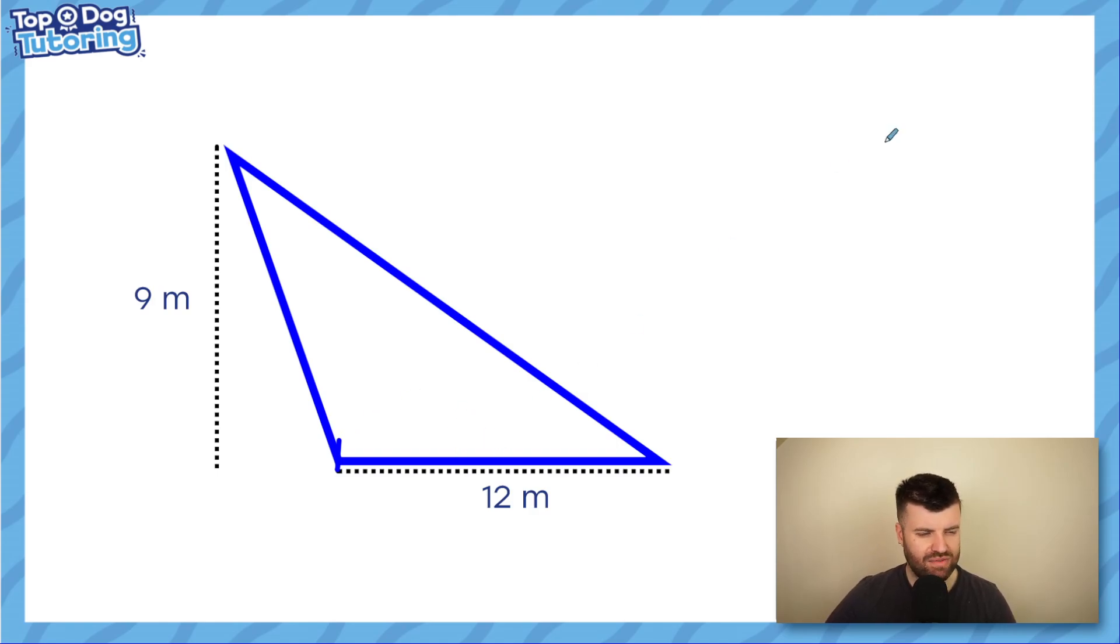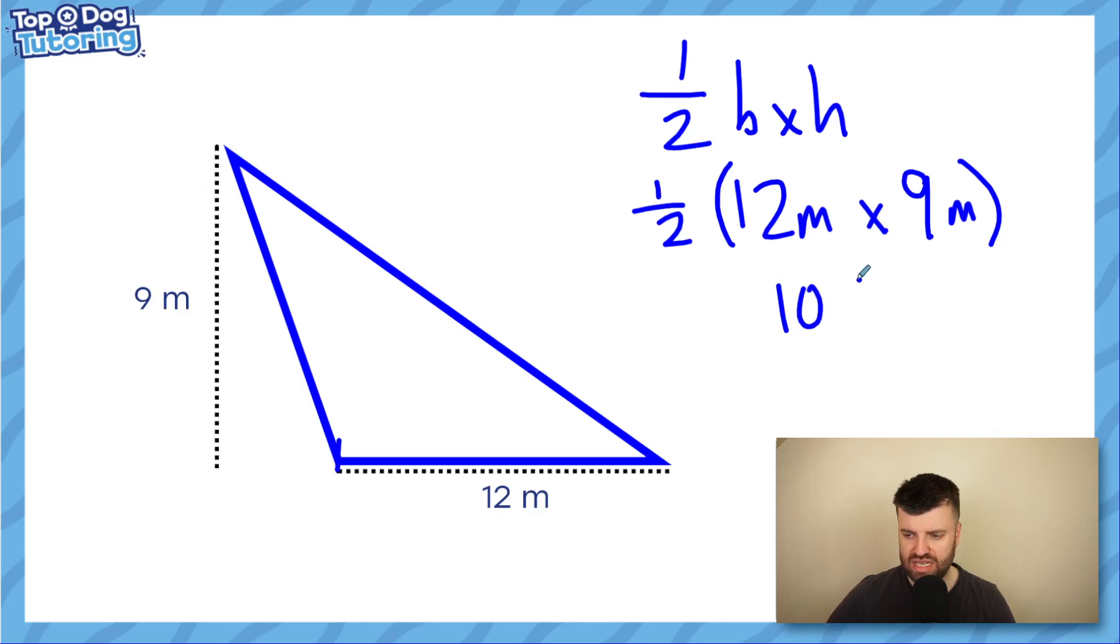Now it's just a simple case of putting in the formula that we've already learned, half base times height. Well, we know the base here is 12 meters. We know the height is 9 meters and we're going to have to half whatever we get. I'm actually going to put it in brackets. 12 times 9 is super easy. It's 108 meters squared.